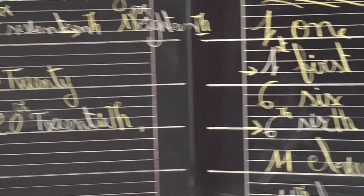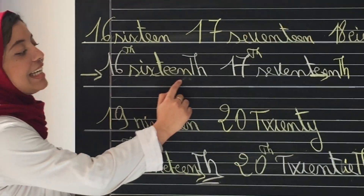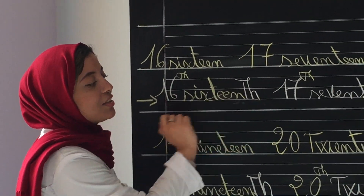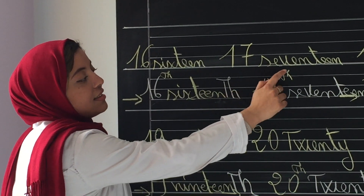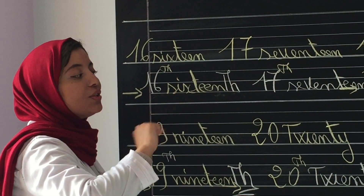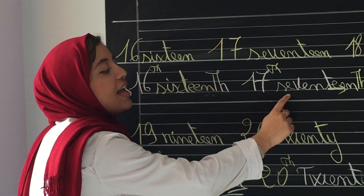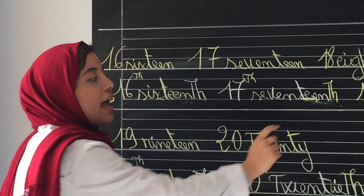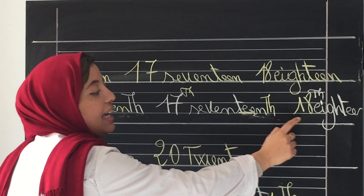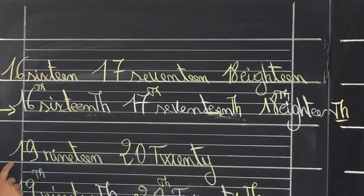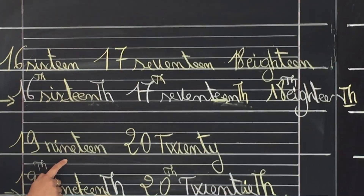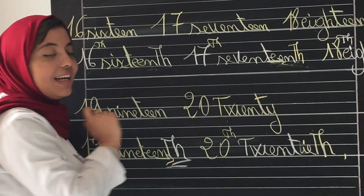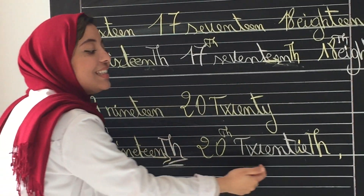14 — 14th. 15 — 15th. 16 — 16th, ending with 'th'. 17 — 17th. 18 — 18th. 19 — 19th. 20 — 20th.